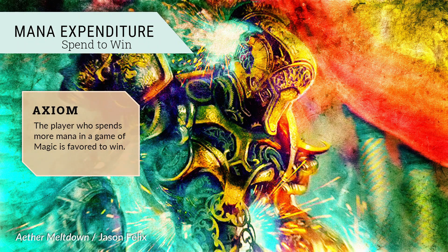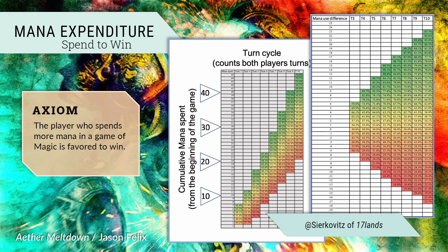There's an ancient axiom in Magic that the player who spends more mana wins more often. This has been tested data-oriented by Sirkovitz, a contributor to the 17 Lands project that compiles data about retail booster drafts on MTG Arena. Sirkovitz confirms that spending mana correlates to higher win percentages. Moreover, the player who spends more mana than their opponent is more likely to win — for instance, spending three more mana than your opponent by turn 10 makes you nearly 9% favored, and spending just one more mana by turn 3 makes you 4% favored.